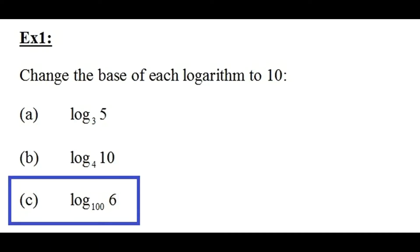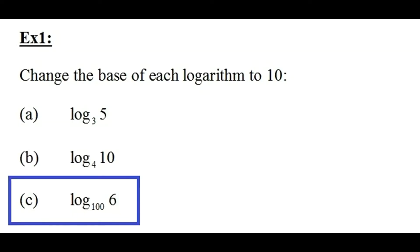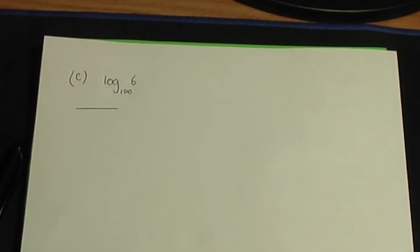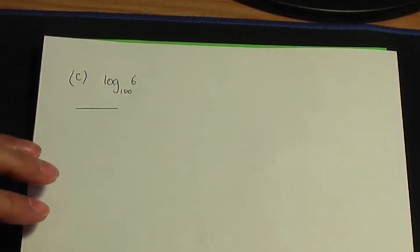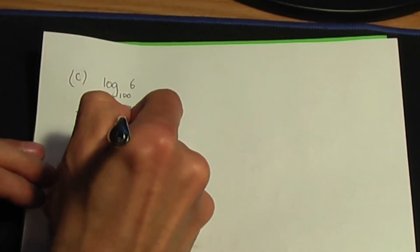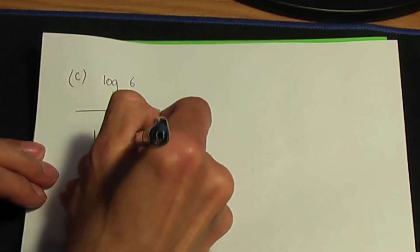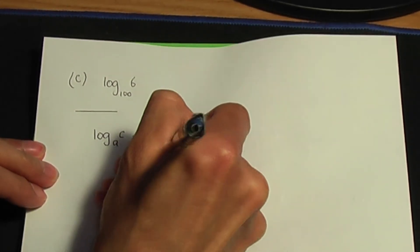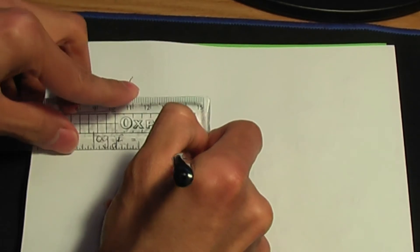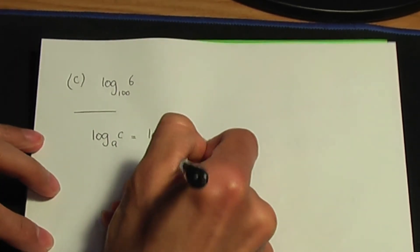Back to the screenshots — we have another example, part c. Part c is to do the same for log of 6 to the base of 100. Back to the paper and pen. Let's use the change of base rule: log of c to the base of a is log of c to the base of b divided by log of a to the base of b.